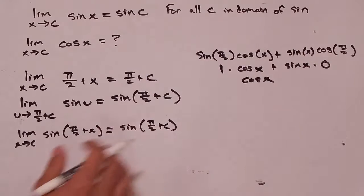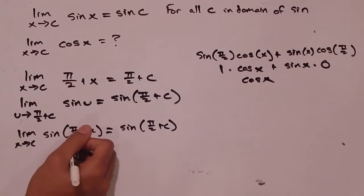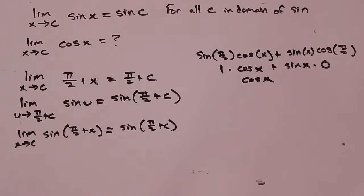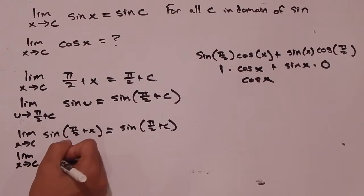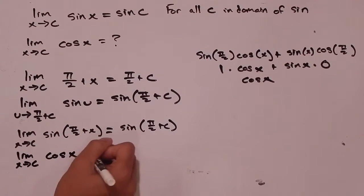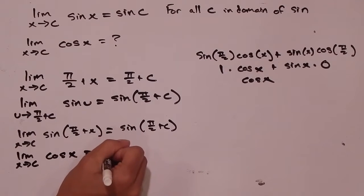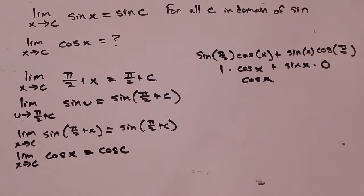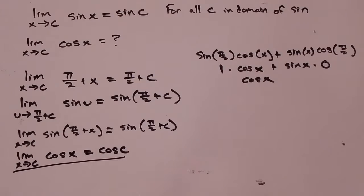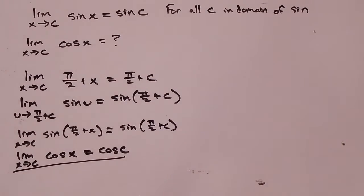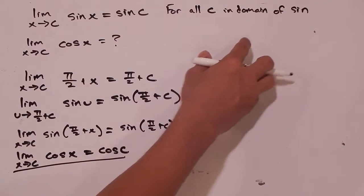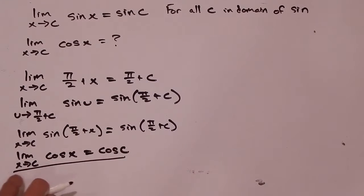Hopefully you're familiar with this sum identity when we have sine of π/2 plus x. That lets us know that the limit as x goes to c of cosine of x is equal to cosine of c. And that's going to be very helpful in proving the rest of our trig limits. This is for all values of c in the domain of sine, and similarly, all values of c in the domain of cosine.